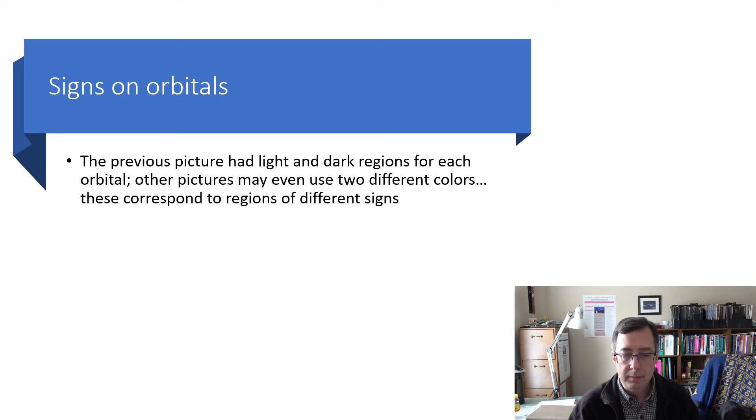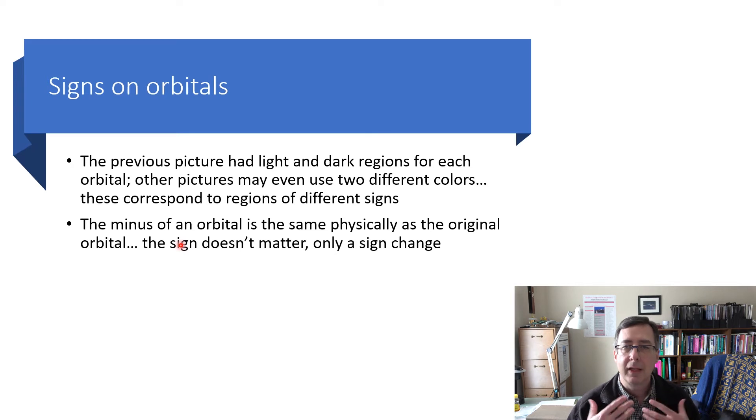So I already pointed out the light and dark regions on those angular plots, and I said that those correspond to a sign change as you go from one lobe to the other. And let me now elaborate on that and say that the minus of an orbital, so suppose you took a P orbital and you multiplied it by minus one, and you swapped which one was the light lobe and which one was the dark lobe, would that change the orbital? In a mathematical sense, yes. In a physical sense, no. The sign on an orbital doesn't matter, and this goes for atomic orbitals or later on molecular orbitals. The fact that the sign changes when you go from one region of an orbital to another, that matters. So the fact the sign changes within an orbital matters, but the overall sign doesn't matter.